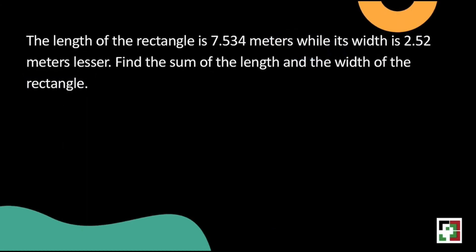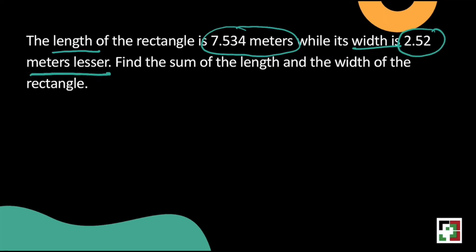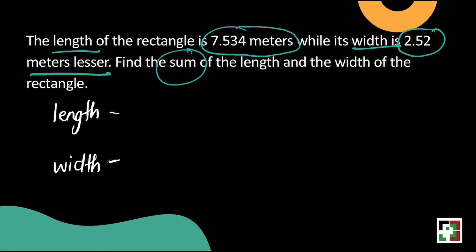We have the next problem. The length of the rectangle is 7 and 534 thousandths meters while its width is 2 and 52 hundredths meters lesser. Find the sum of the length and the width of the rectangle. Let us first identify our given: the length is 7.534 meters, and the width is 2.52 meters lesser compared to the length. When we say 2.52 meters lesser, it means the width is shorter by 2.52 meters compared to the length.